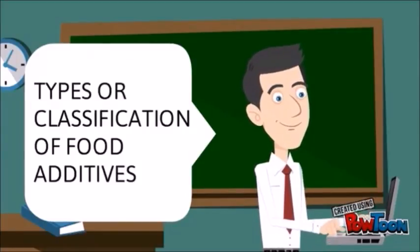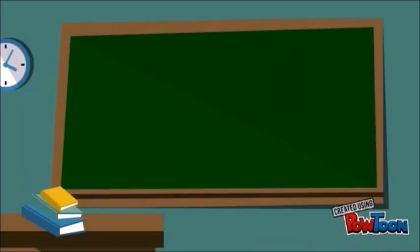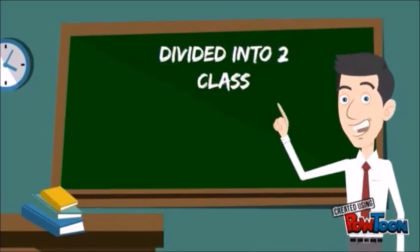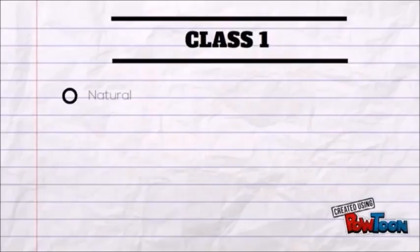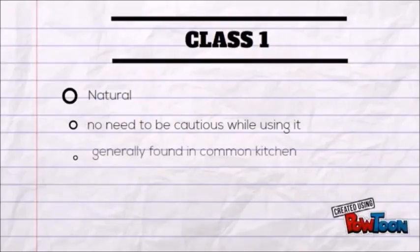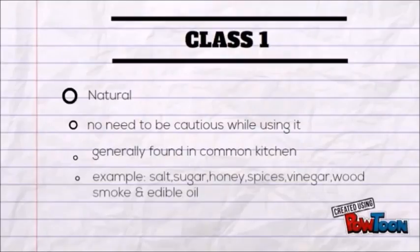The classification of preservatives is divided into two classes: Class 1 and Class 2. The Class 1 preservative is natural, so there is no need to be cautious while using it. This preservative is also generally found in the common kitchen. Examples of Class 1 preservatives are salt, sugar, honey, vinegar, spices, and wood smoke.